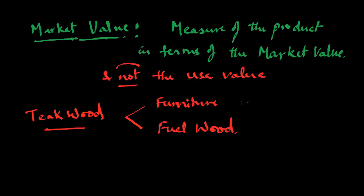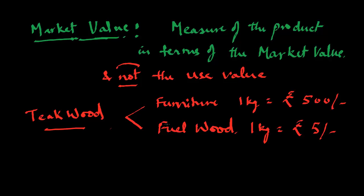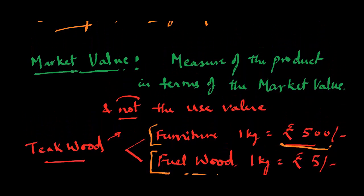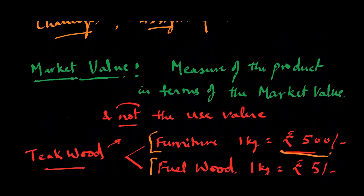If you make furniture, 1 kg of wood may cost 500 rupees. In the case of fuel wood, 1 kg would cost only 5 rupees. So the market value of teak wood would be considered as 500 rupees in the furniture case and 5 rupees in the fuel wood case. The market value depends on where the product is being used or consumed.